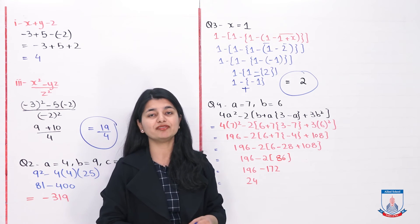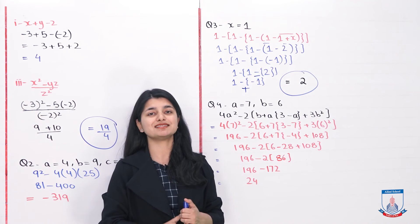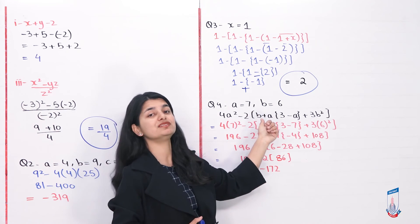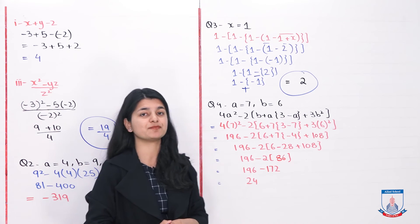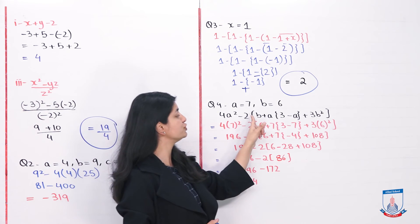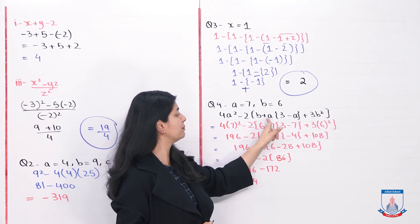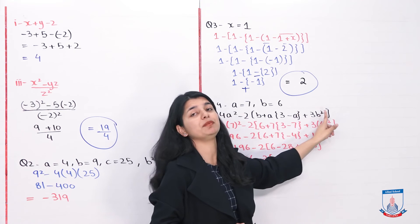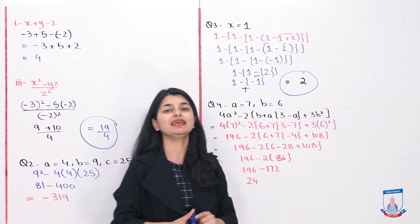That's how we solved question 3. The last question in exercise 8D is question number 4. You're given a value of 7 and b value of 6. You also have an expression: 4a squared minus 2, then the bracket b plus a, braces 3 minus a, braces close, plus 3b squared, bracket close.